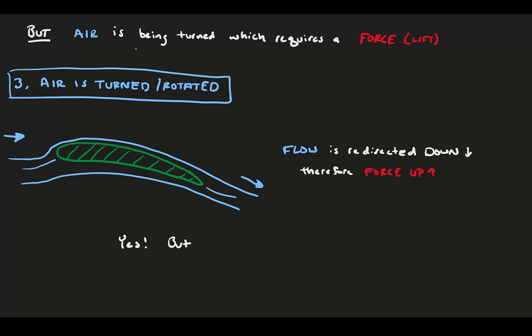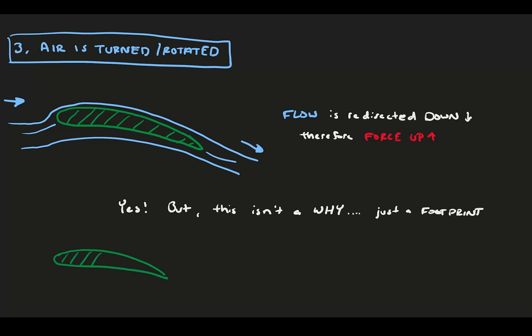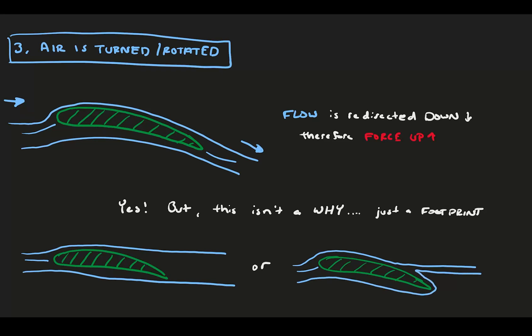The only issue with this explanation is that it's not really an explanation at all. It isn't a reason why lift occurs. The downward turning in flow rotation is more of a footprint of what the foil is doing. It's a consequence of the lift, not a reason for why the lift happens. For example, it doesn't explain why flow wouldn't just pass by the foil and disregard its angle, or even wrap around the backside of the foil so that it can still exit horizontally on the backside.